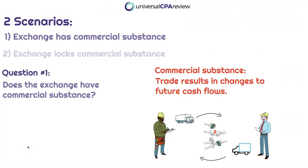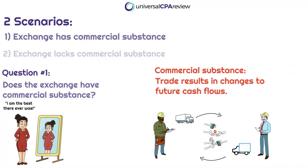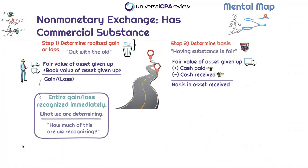Scenario number one: the non-monetary exchange transaction has commercial substance. This means there's going to be an impact to the change in cash flows from this transaction. When a non-monetary exchange transaction has commercial substance, how we account for this is going to be more straightforward than had we lacked commercial substance. In the event that it lacks commercial substance, things get a little bit more turbulent. But let's learn how to walk before we learn how to run — let's start with the easier situation, which is when the non-monetary exchange transaction has commercial substance.